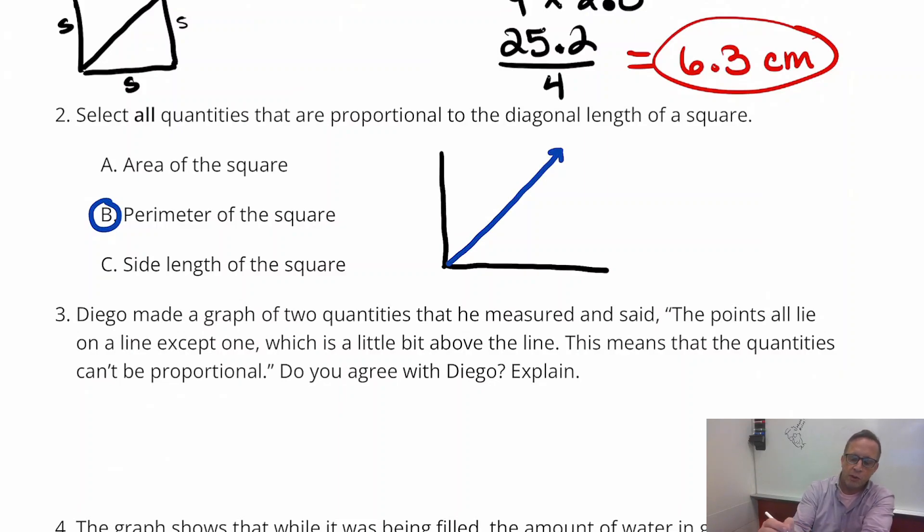And the side length of a square, that's also going to be straight as an arrow. I'm not saying it's like a different arrow like that, but it could look like that. But the only thing that's not proportional is going to be the area. Area of the square, and anything area really.